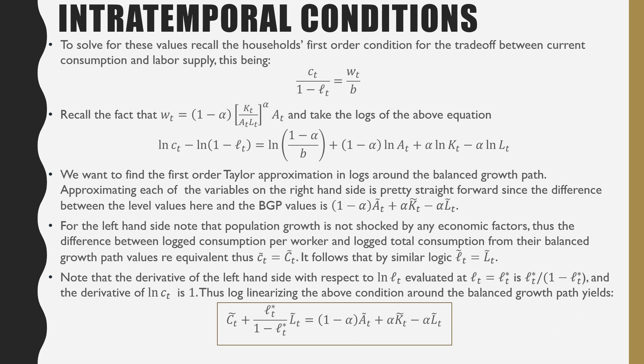Note that the derivative of the left-hand side with respect to labor supply per household at time t, evaluated at Lt star which is our optimum value, is Lt star over 1 minus Lt. That is labor supply per household all over the optimal leisure. The derivative of the log consumption per household or consumption per worker is 1.